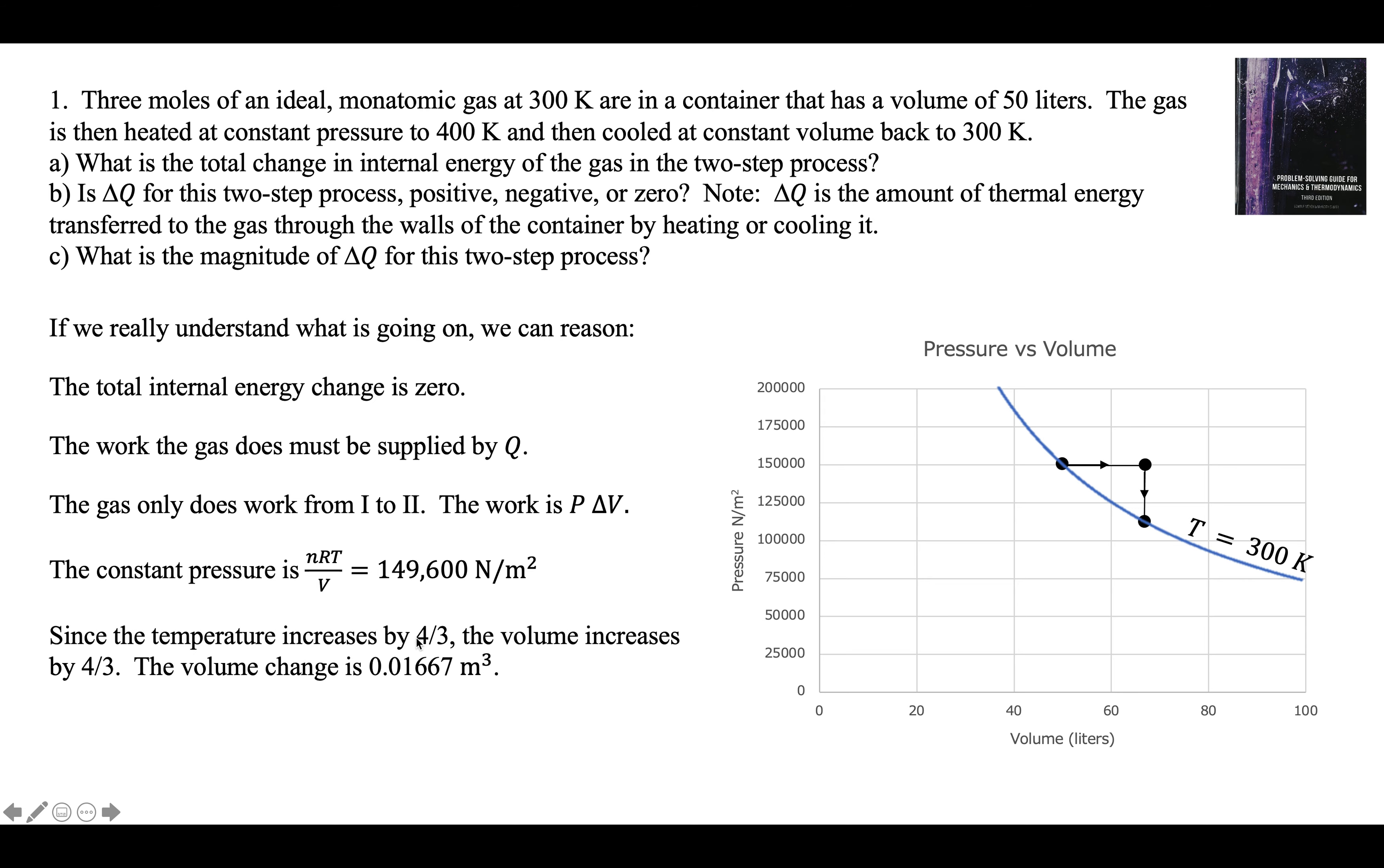Since the temperature increases by 4 thirds from 1 to 2, the volume must increase by 4 thirds. The volume change is 0.01667 cubic meters. The work is P delta V, plus 2490. If the gas did that much work with no change in internal energy, that has to be Q. Plus 2490. That's it.